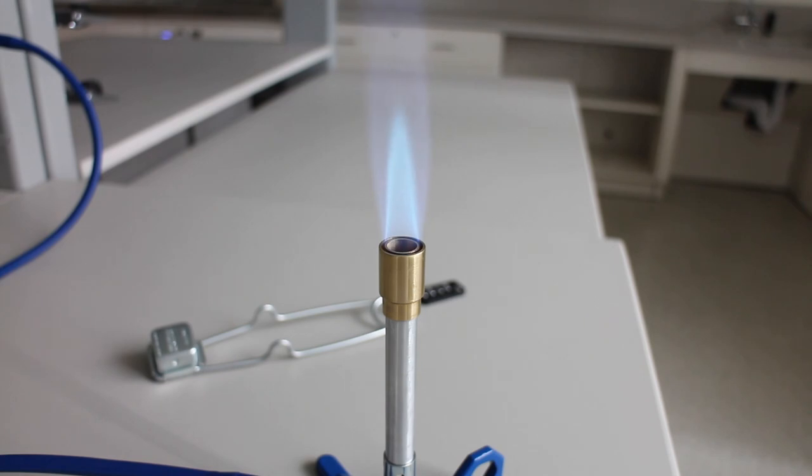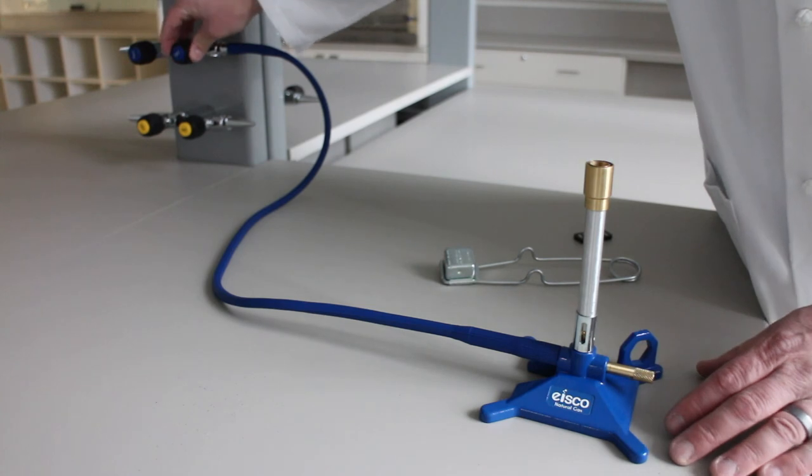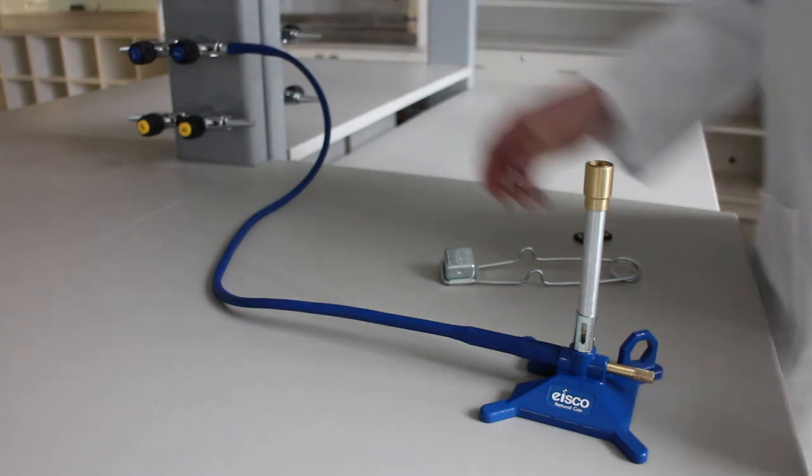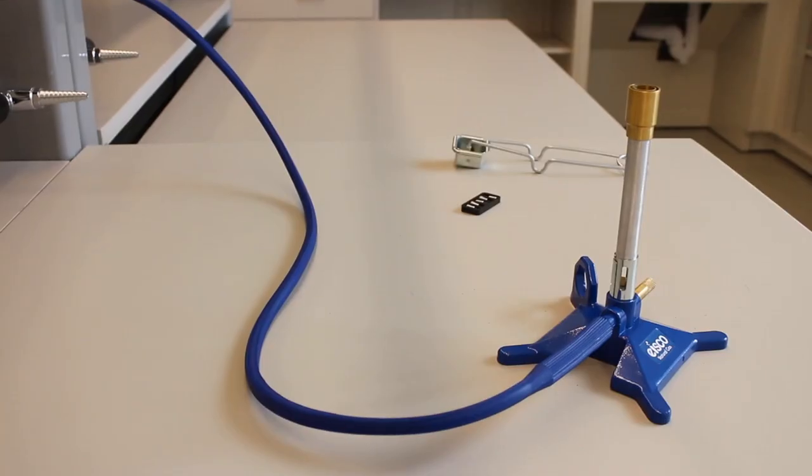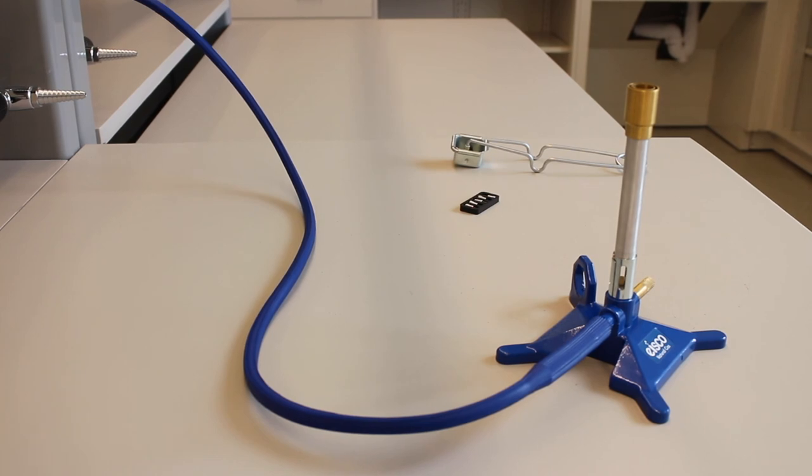Never leave a Bunsen burner running when you are not actively using it. When you're done with the Bunsen burner, simply turn off the main gas control on your lab bench. Keep in mind that the burner will remain very hot for a while after it is turned off.